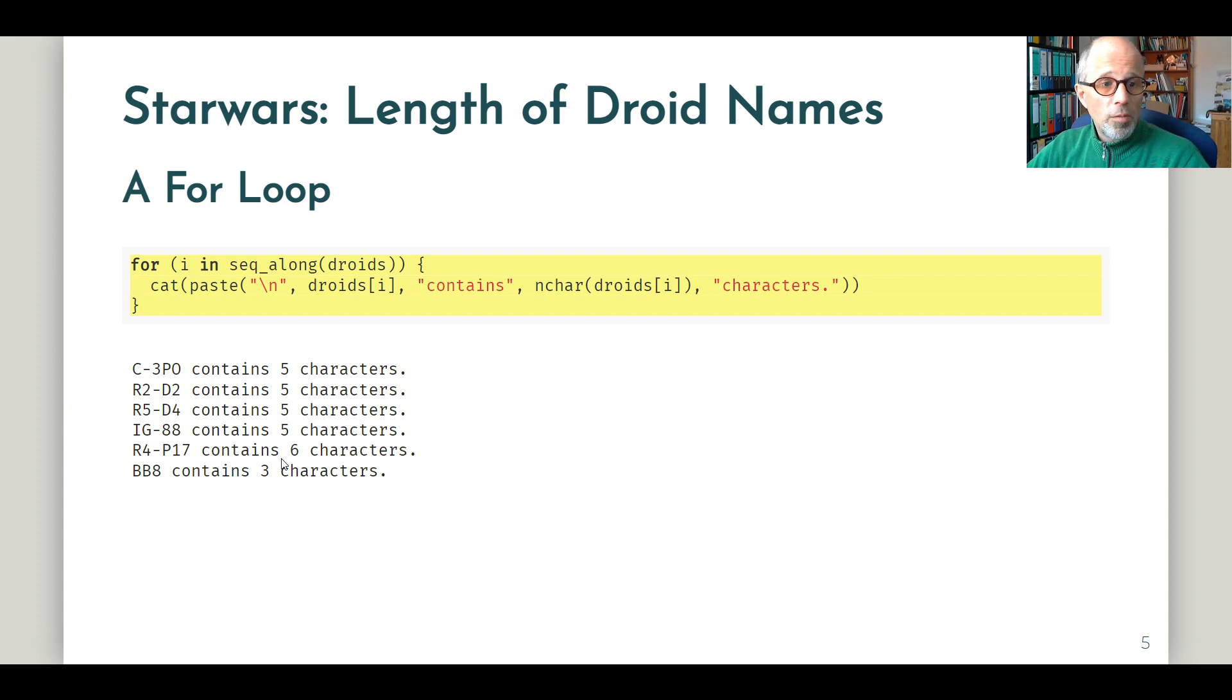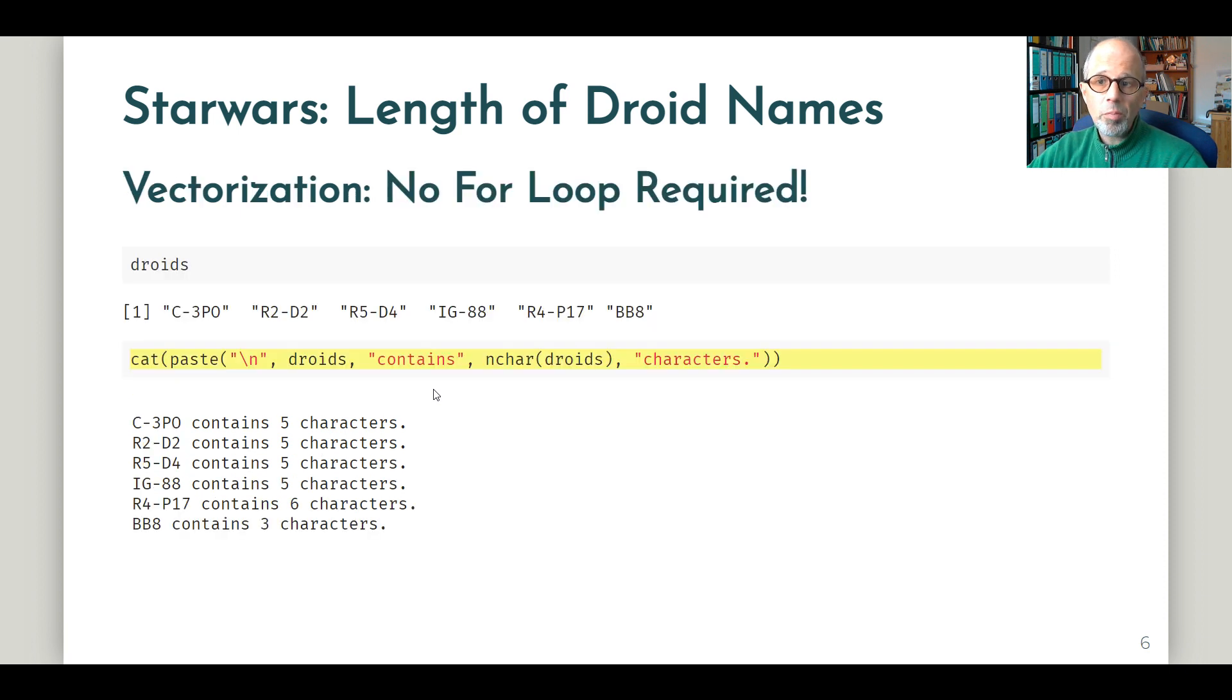So how can we avoid the loop now? It's simple, because the functions that we're using are actually vectorized. What this means is somebody has to write a loop, but it doesn't have to be us. The functions have their own looping construct built in—the technical term is vectorization.